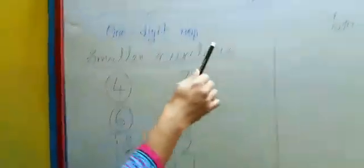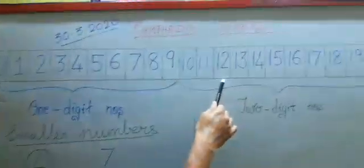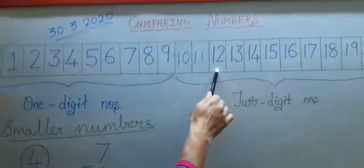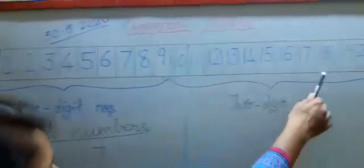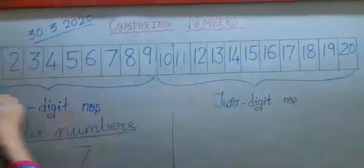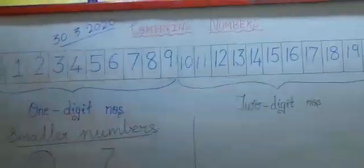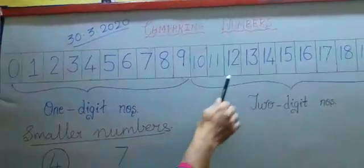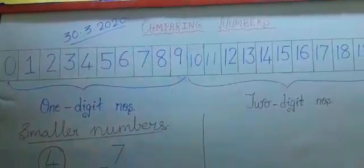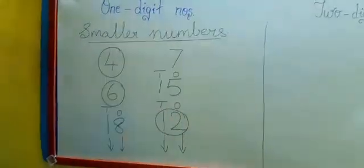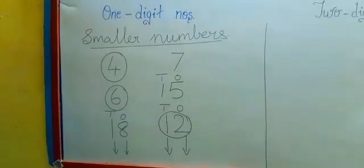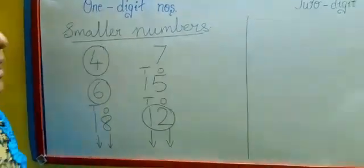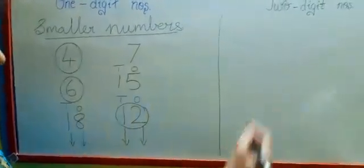See these numbers on the number line. 12 is here, 18 is here. So which is closer to 0? 12 is closer to 0, so 12 is the smaller number. Similarly, we will compare bigger numbers.